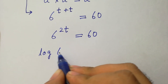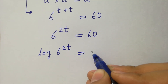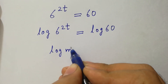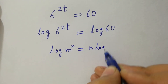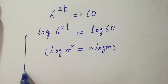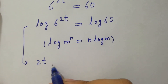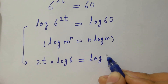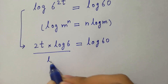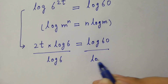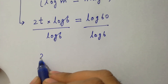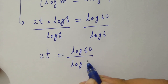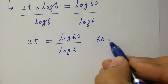Take log on both sides: log of 6 to the power 2t equals log 60. Since log m to the power n equals n times log m, we have 2t times log 6 equals log 60. Dividing both sides by log 6, log 6 cancels.